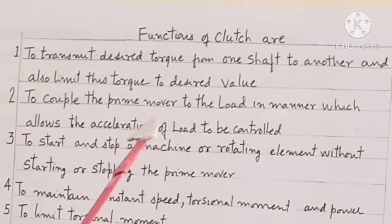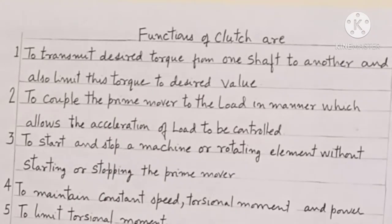Functions of clutch are: first, to transmit desired torque from one shaft to another shaft and also transmit this torque to the desired value. Second, to couple the prime mover to the load in a manner which allows the acceleration of the load to be controlled.